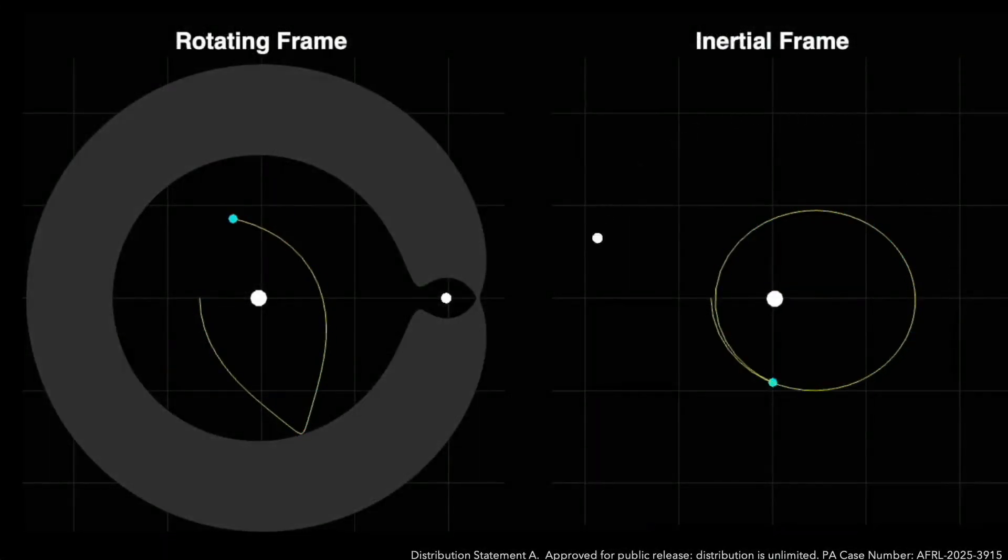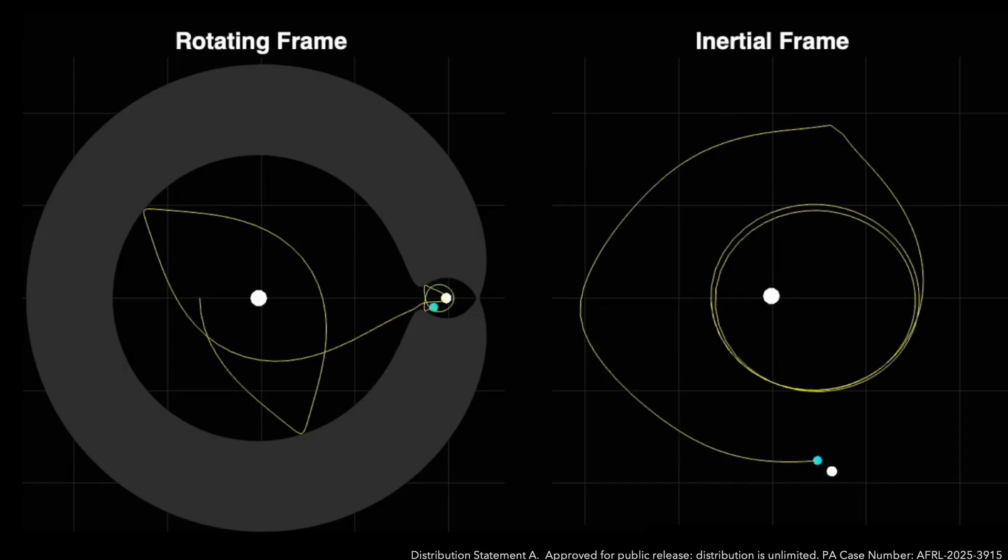What if a spacecraft could cycle between Earth and Moon orbits performing multiple circuits of each, naturally and indefinitely, with zero propulsion? We've discovered a new class of orbits that do just that.